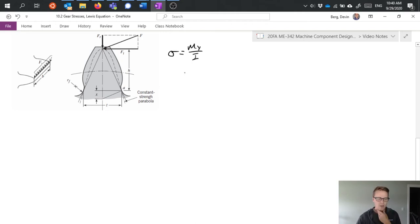We would start effectively with our normal bending stress equation, but then we have to figure out how to apply the geometry of the gear tooth to this. I'm not going to go through derivations using that parabolic geometry, but effectively what we end up with is an equation that looks like this.